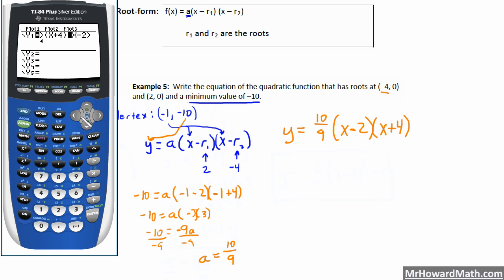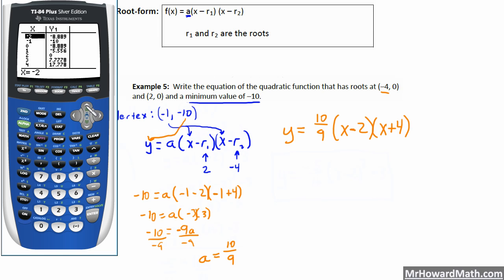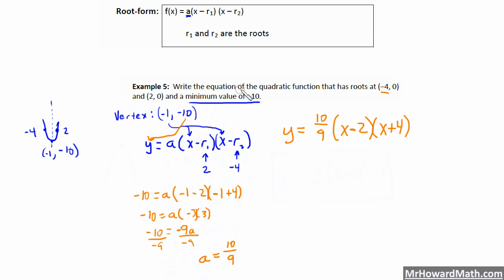I've typed that into y equals. I want to make sure my roots are in fact 2 comma 0 and negative 4 comma 0 — and they are. I also need to confirm the point negative 1 comma negative 10 is in there, and negative 1 comma negative 10 is in there. So we've checked this with our calculator and everything checks out. We are done with this video — see you in the next one.